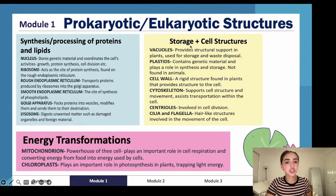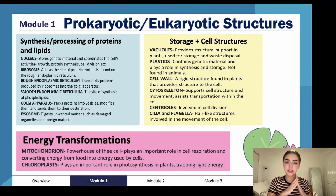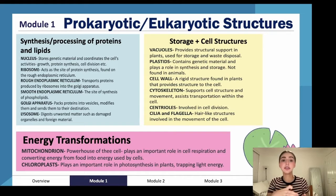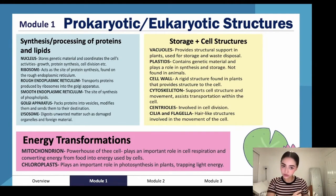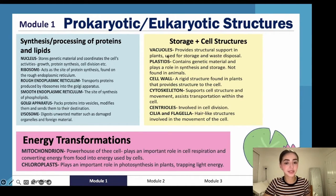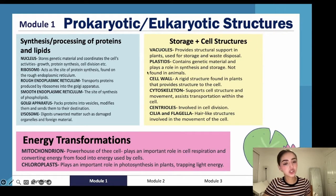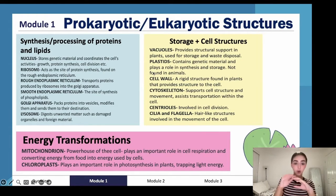Vacuoles help provide structural support in plants and are used for storage and waste disposal — think of them like little containers that can fill with water and nutrients as needed. Plastids contain genetic material and play a role in synthesis and storage; they're found specifically in plants. Cell walls are rigid structures found in plants that provide structure to the cell.